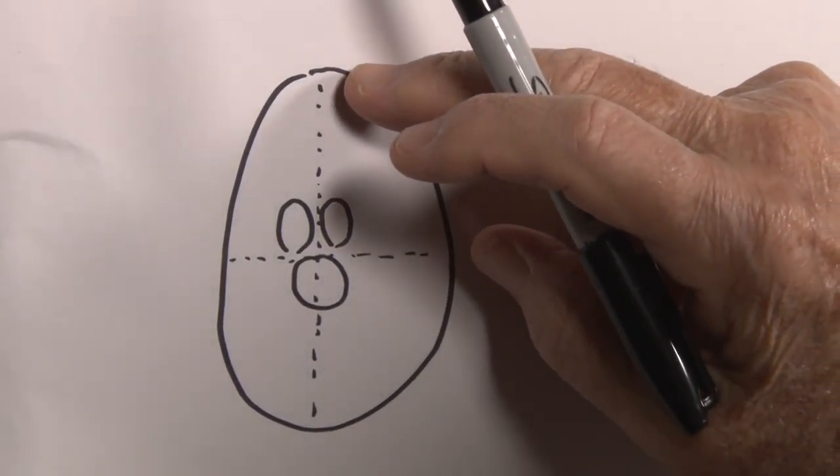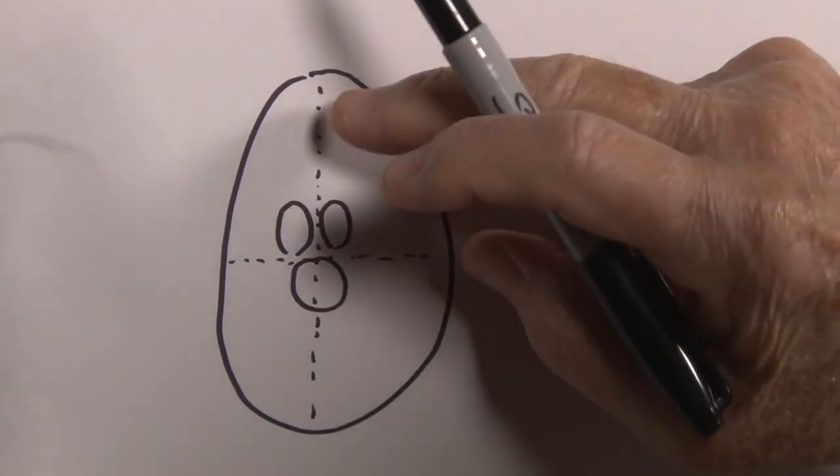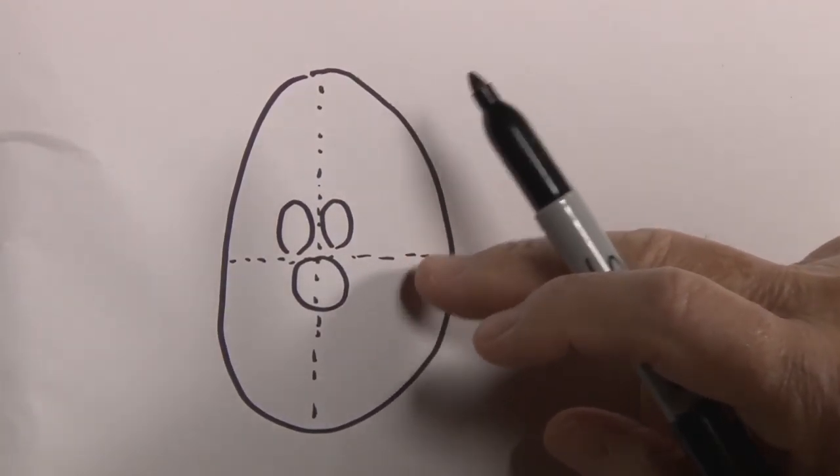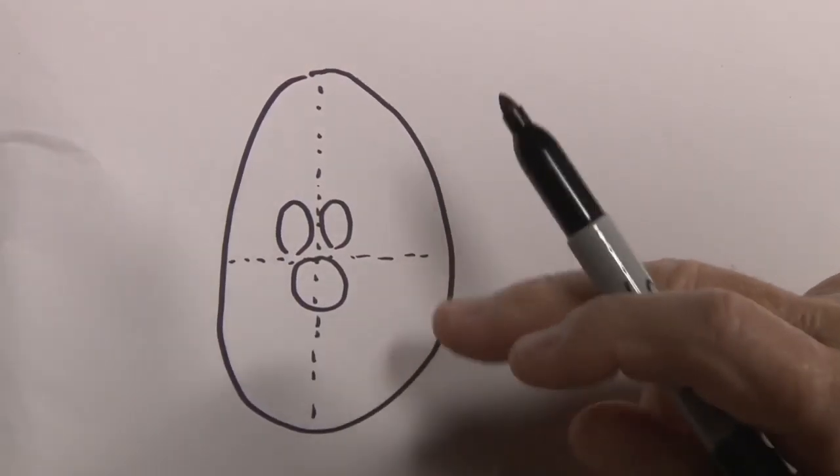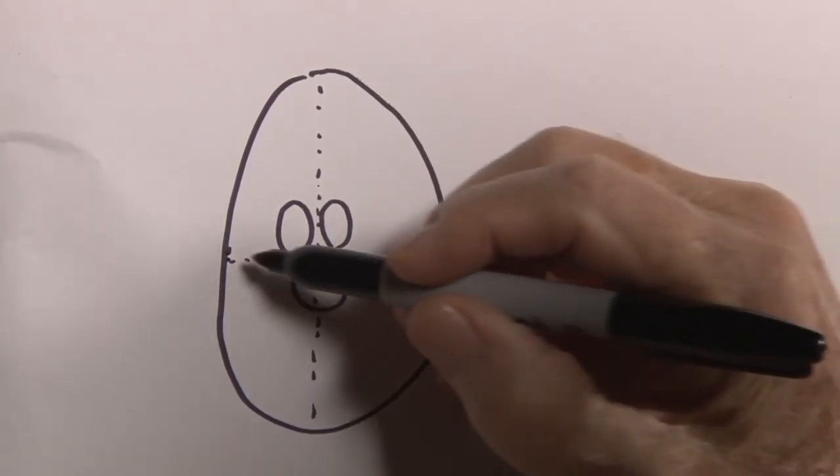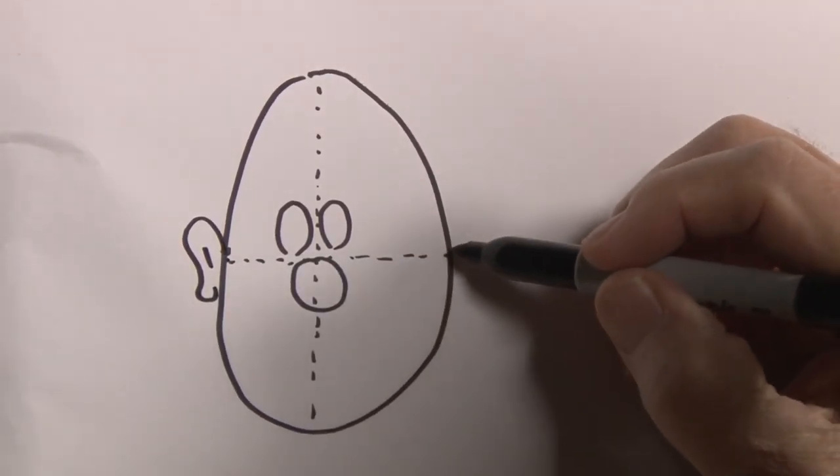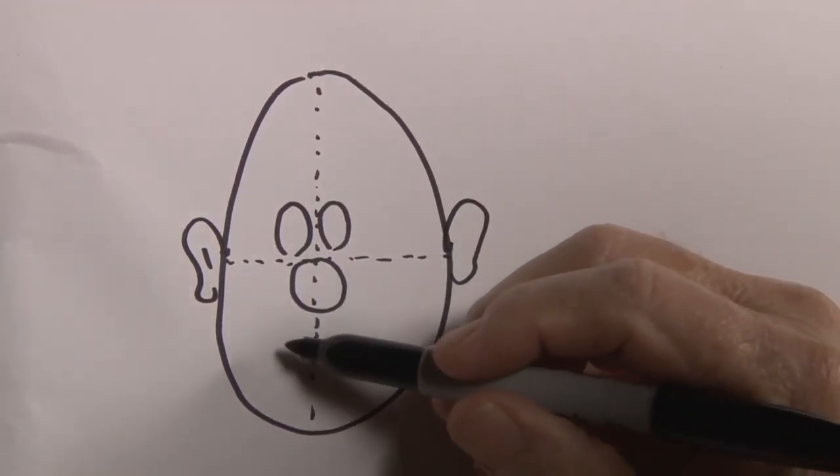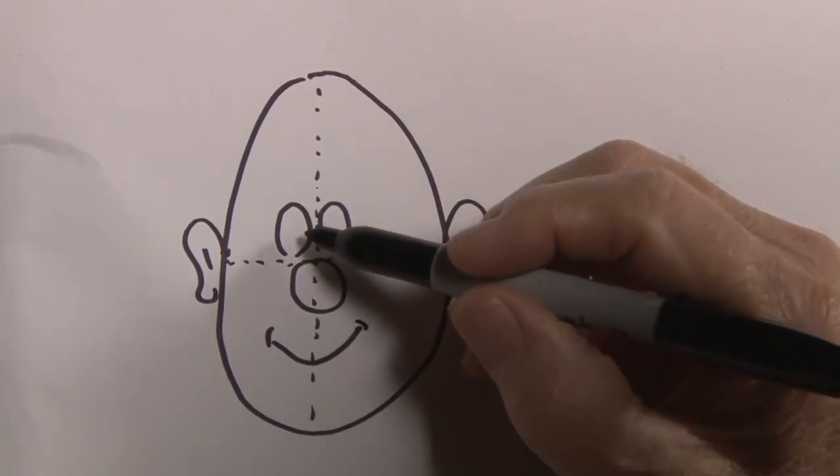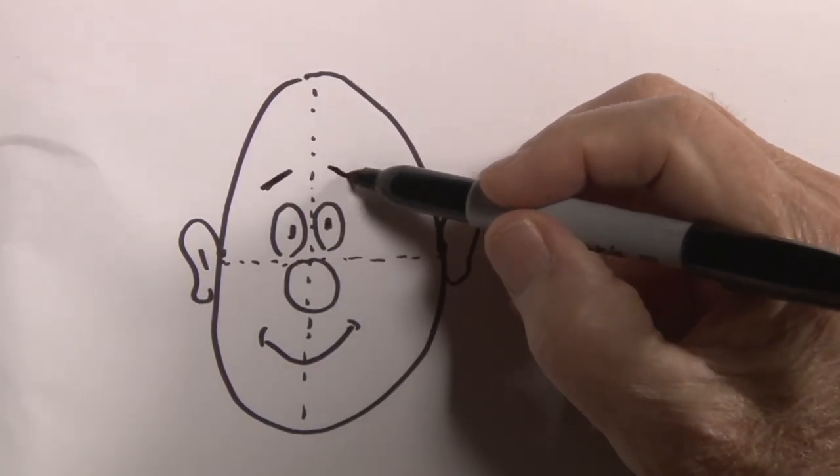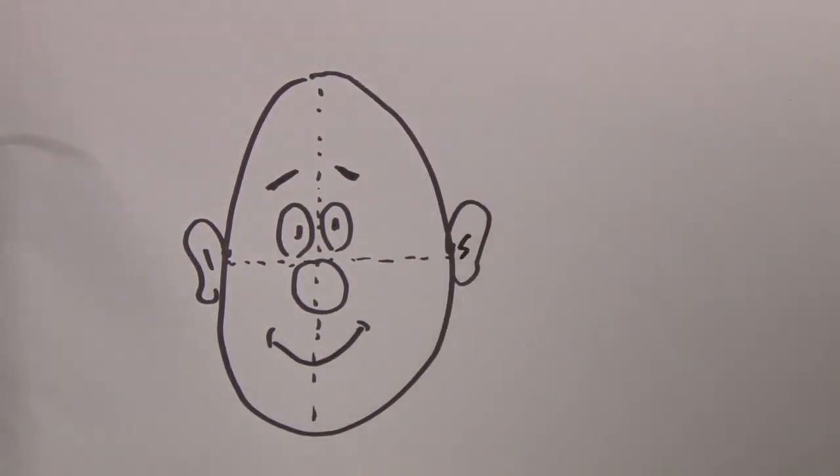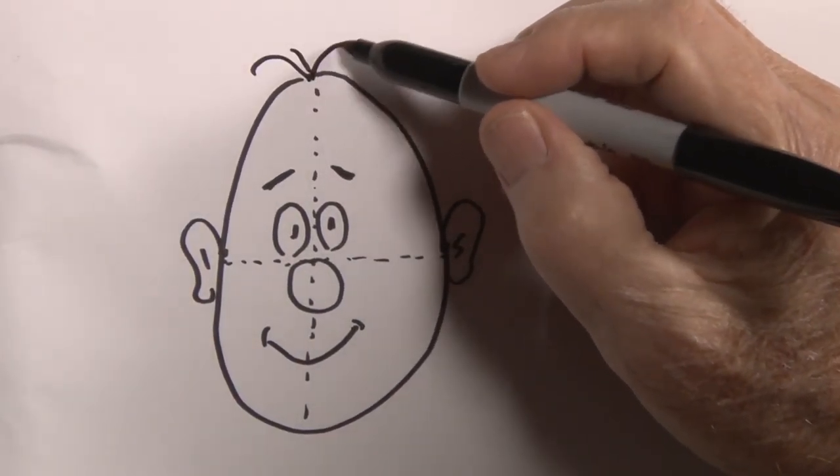Then on either side and right below you'd have the beginning of a comic face. Of course when you're doing this you ought to have a pencil for these marks so you can erase the dotted lines after you're finished. We used the horizontal lines as a basis for the ears. Somewhere down here we'd put a mouth and pupils, and presto a comic face.